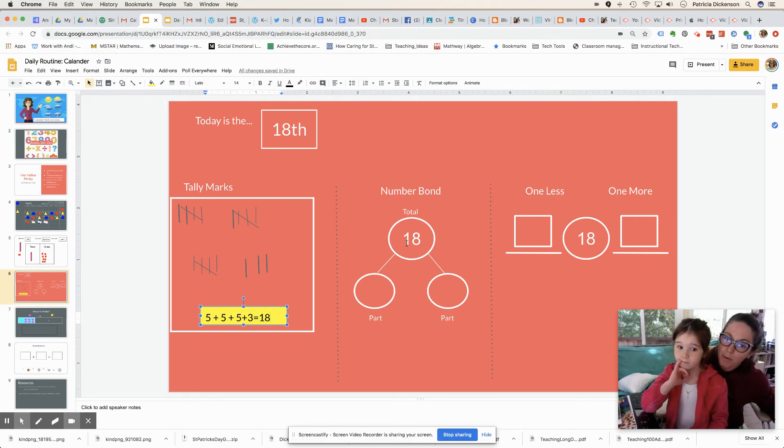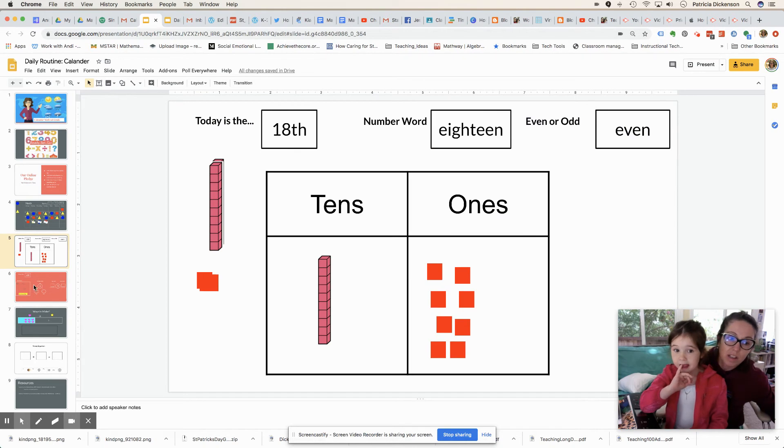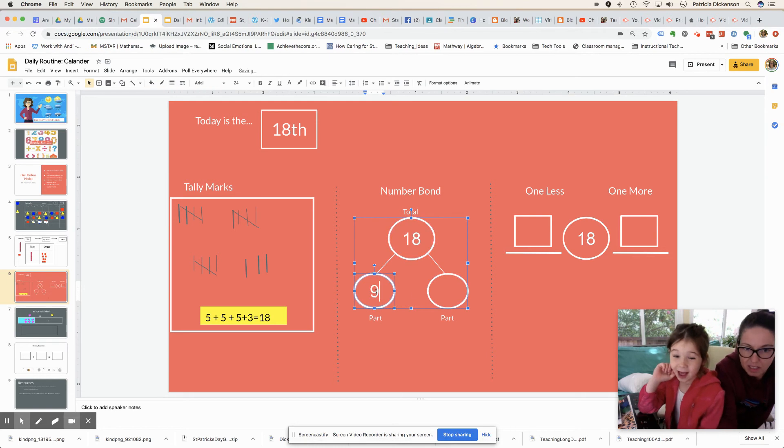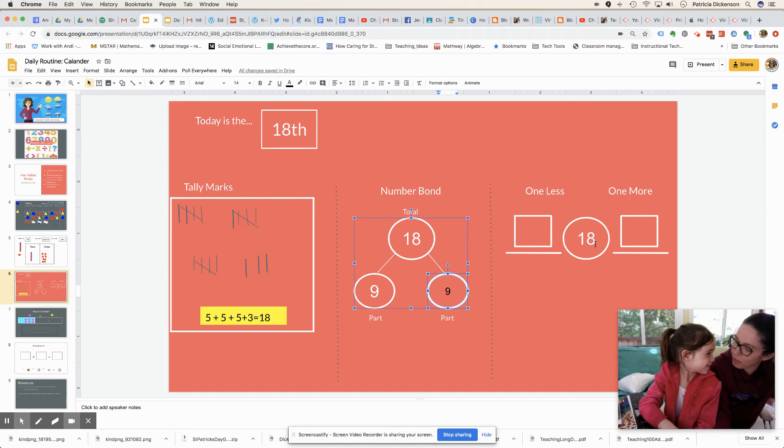Can you think of another number bond that we can break apart the 18 into two parts? I'm going to do two same numbers. I can do nine and nine. Oh, you're doing doubles, are you? Yes, I am. Doubles make the shovel. Okay, awesome.